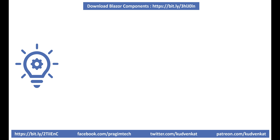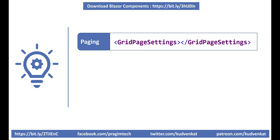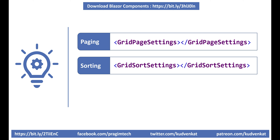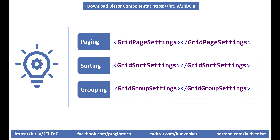Here's one quick tip for you. The Syncfusion grid component follows a naming convention pattern that makes it easier to remember which component to use for what. In our previous videos we discussed data grid paging and sorting — to customize page settings we used GridPageSettings, to customize sort settings we used GridSortSettings. You clearly see a naming pattern here. So you may have guessed already — to customize grid group settings, we use a component called GridGroupSettings.